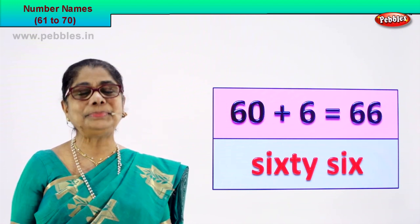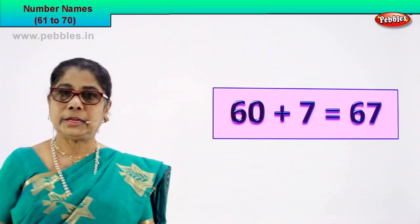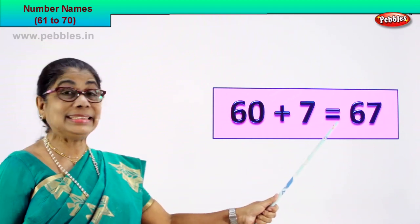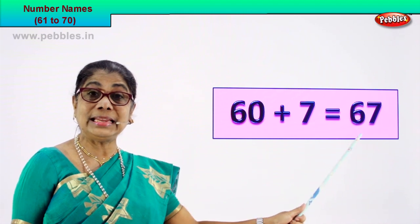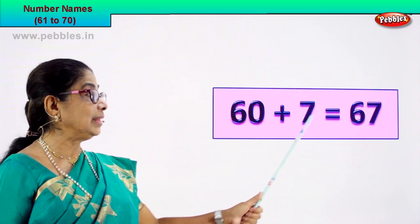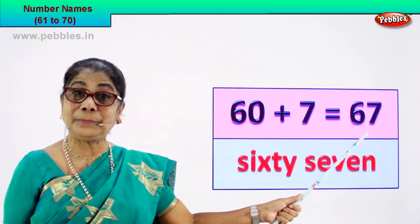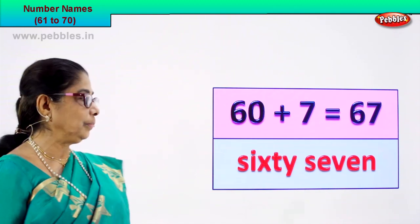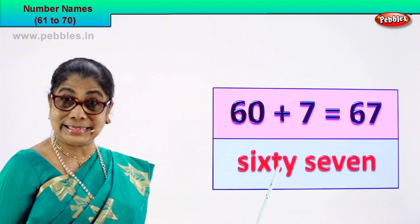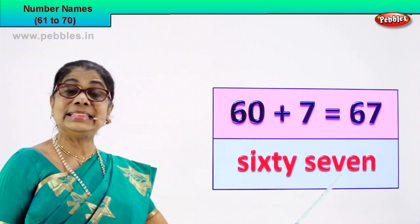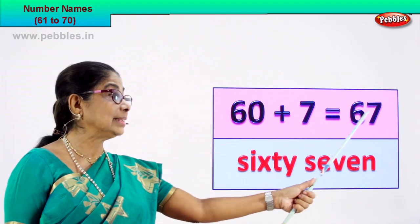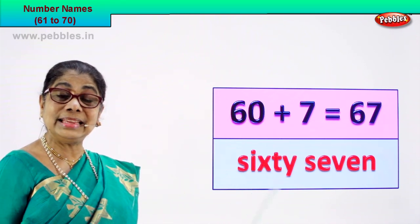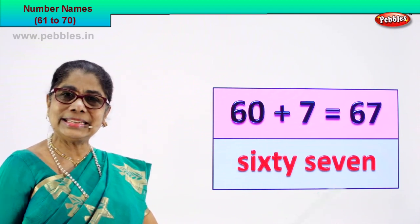Shall we take our next number? Yes! Look! 60 plus 7 is equal to 67. 6 and 7, 67 is the numeral. How do we write its name? You know the spelling of 60 and you know the spelling of 7. S-I-X-T-Y, and S-E-V-E-N. 67 — the numeral 6 and 7. Its name is written in spelling: sixty-seven. Did you enjoy? Very easy, isn't it?